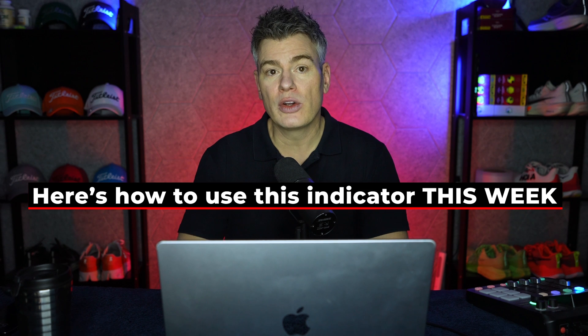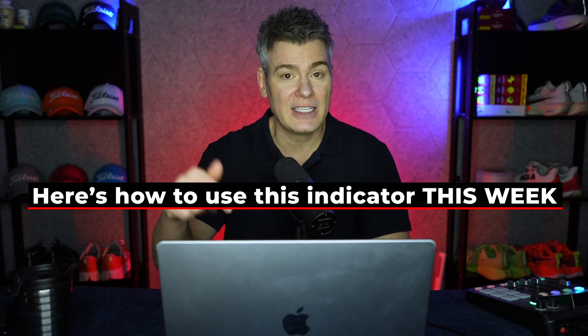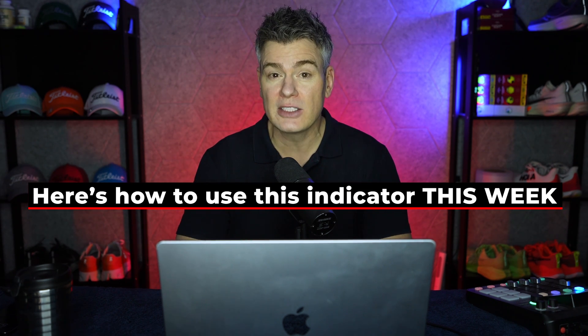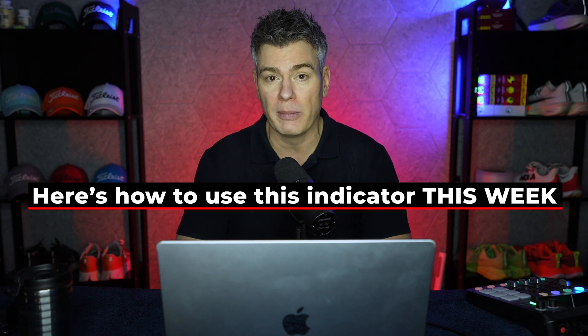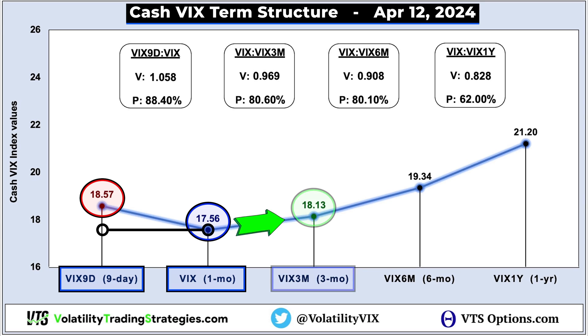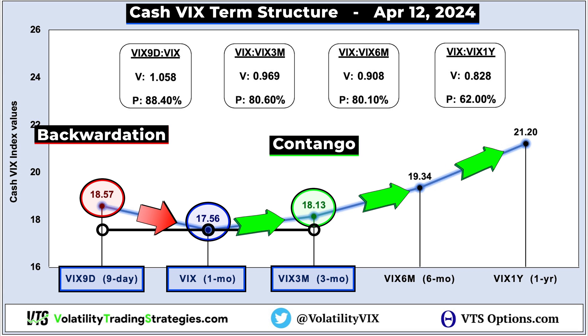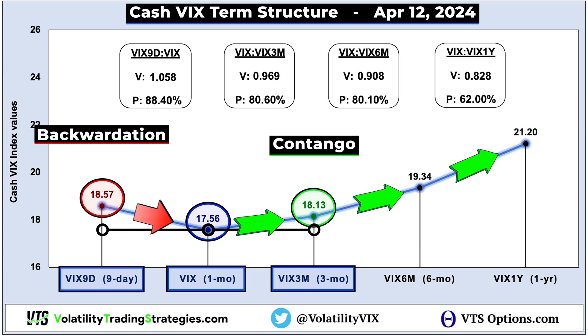So if we look at the cash VIX term structure as it is right now, we can see that there is already some fear being priced into the short term. The nine-day VIX has already gone above the VIX index, signaling some short-term fear — a constant stream of videos of rockets being launched tends to do that. But the one-month VIX is not yet above the three-month VIX, so this curve is only front-end backwardation; past one month, it's still upward-sloping contango.